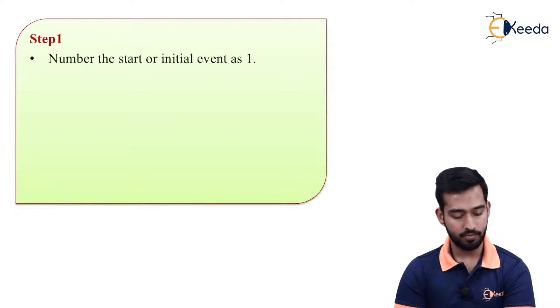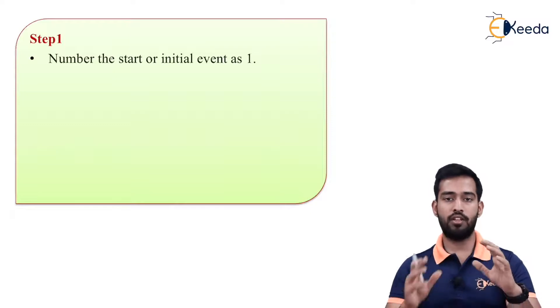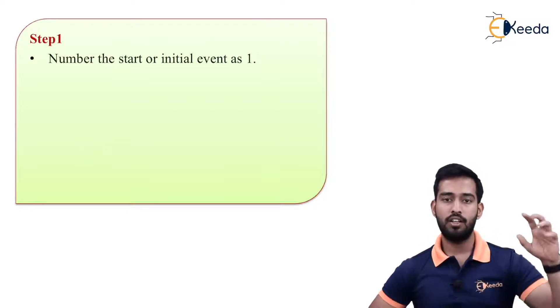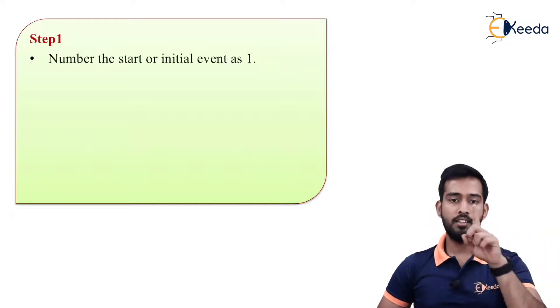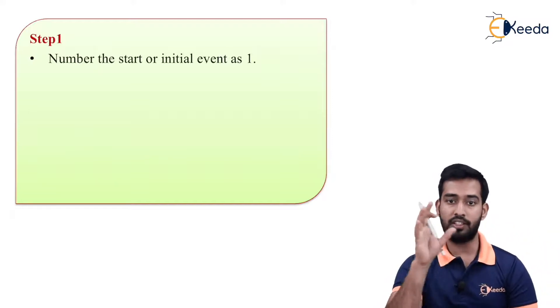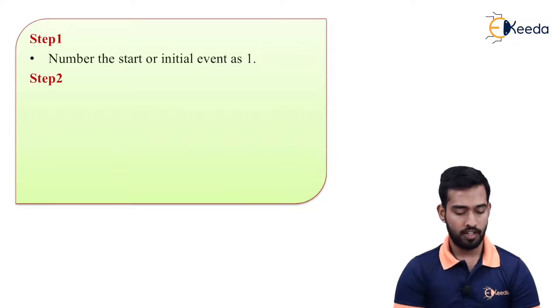Step one: Number the start or initial event as one. Always, whenever you start a particular activity, you will have beginning event. That is numbered as one. In your network diagram, the very first event is number one event.